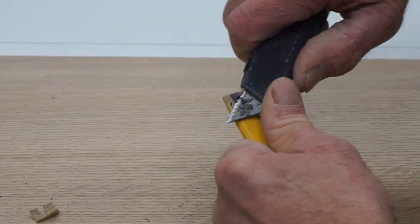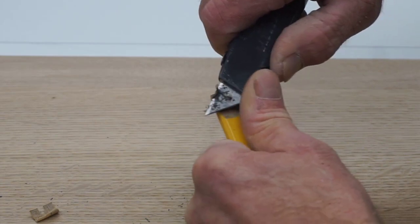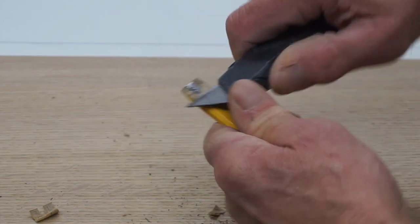Flip around and do the other side. Finish whittling the sharp edge on the lead.